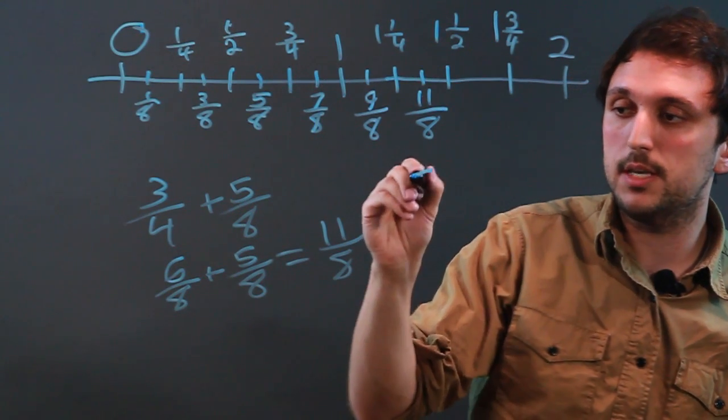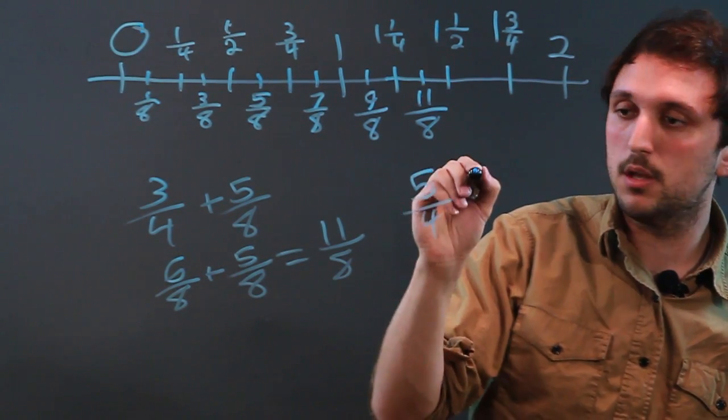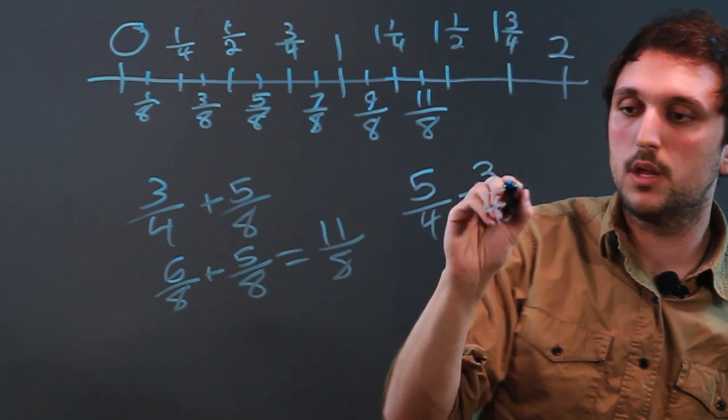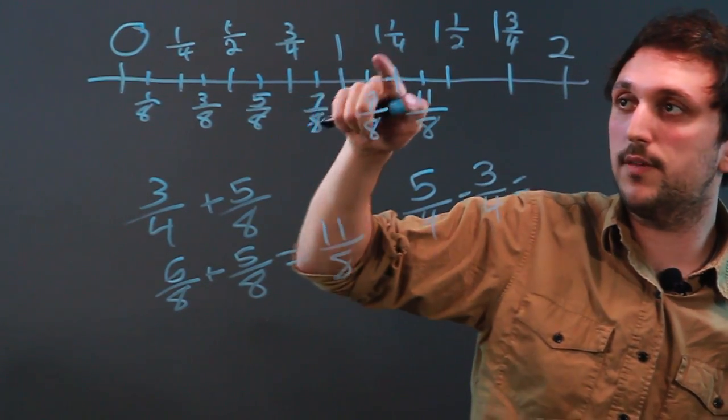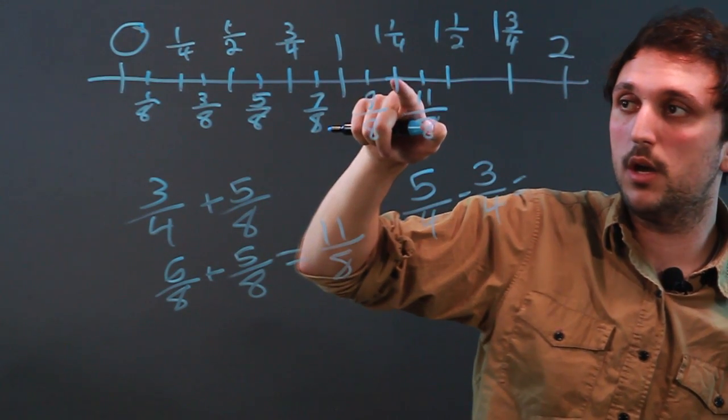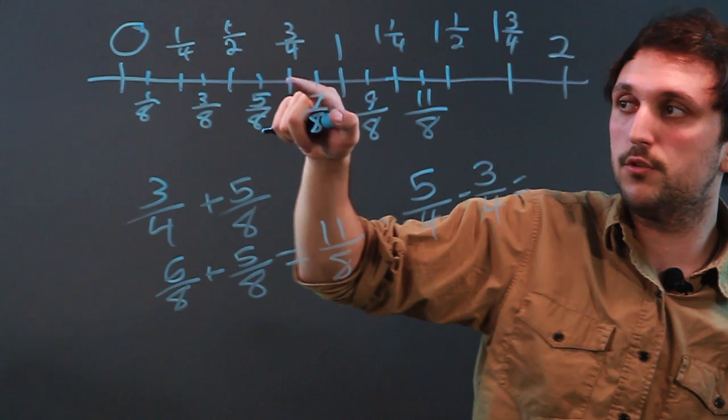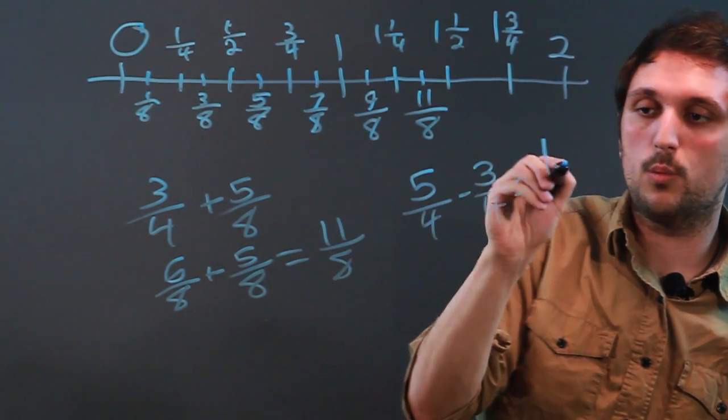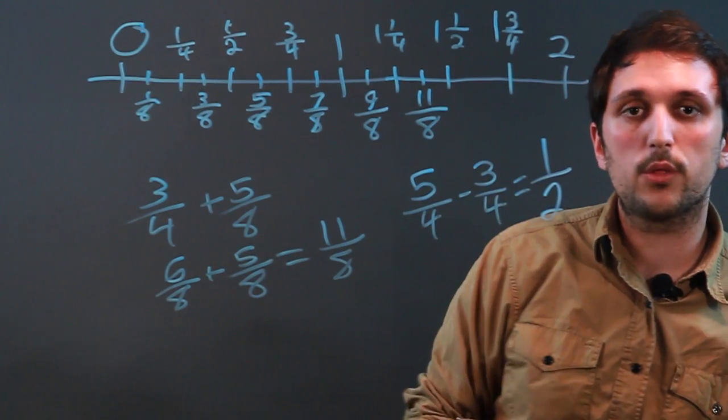Now, to subtract, same idea. Let's say we have five fourths minus three fourths. And that's going to equal, well, we start at five fourths, which is one and one fourth, and we go one, two, three fourths. And we end up at one half or two fourths.